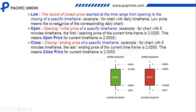The low is the record of the lowest price reached at the time frame from the opening to the closing of a specific time frame. Candlesticks are streamlined according to time frames — the low is the lowest price the price has reached before the closing of a candle in that specific time frame.